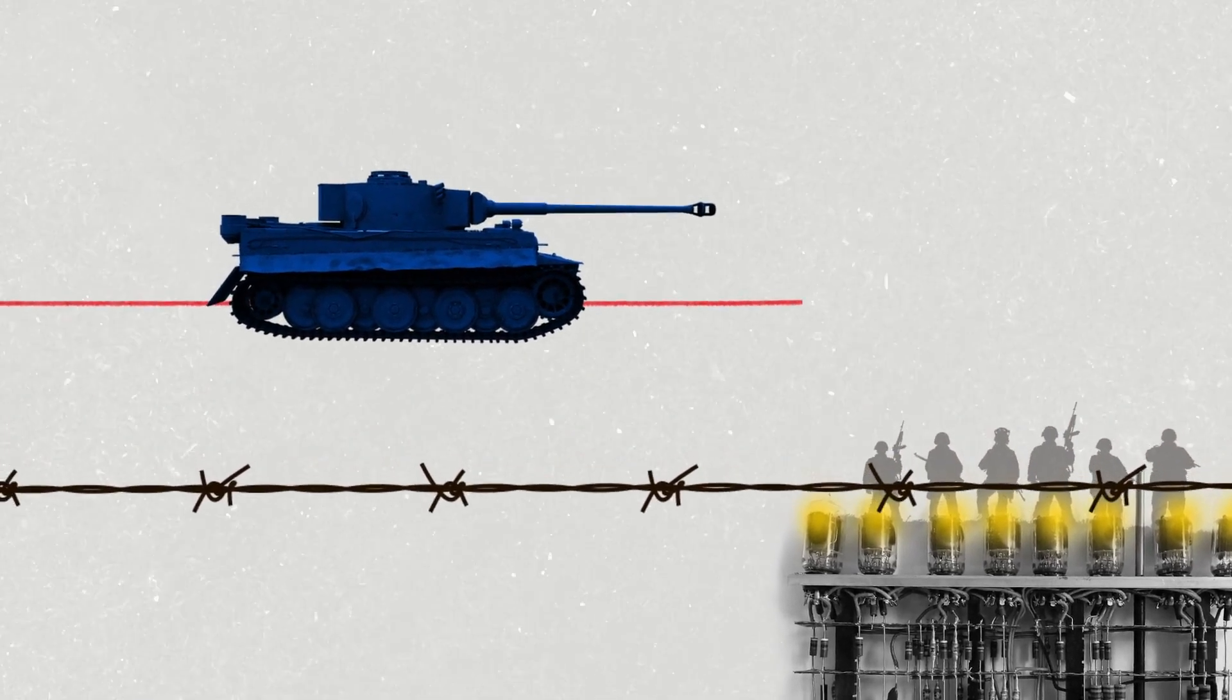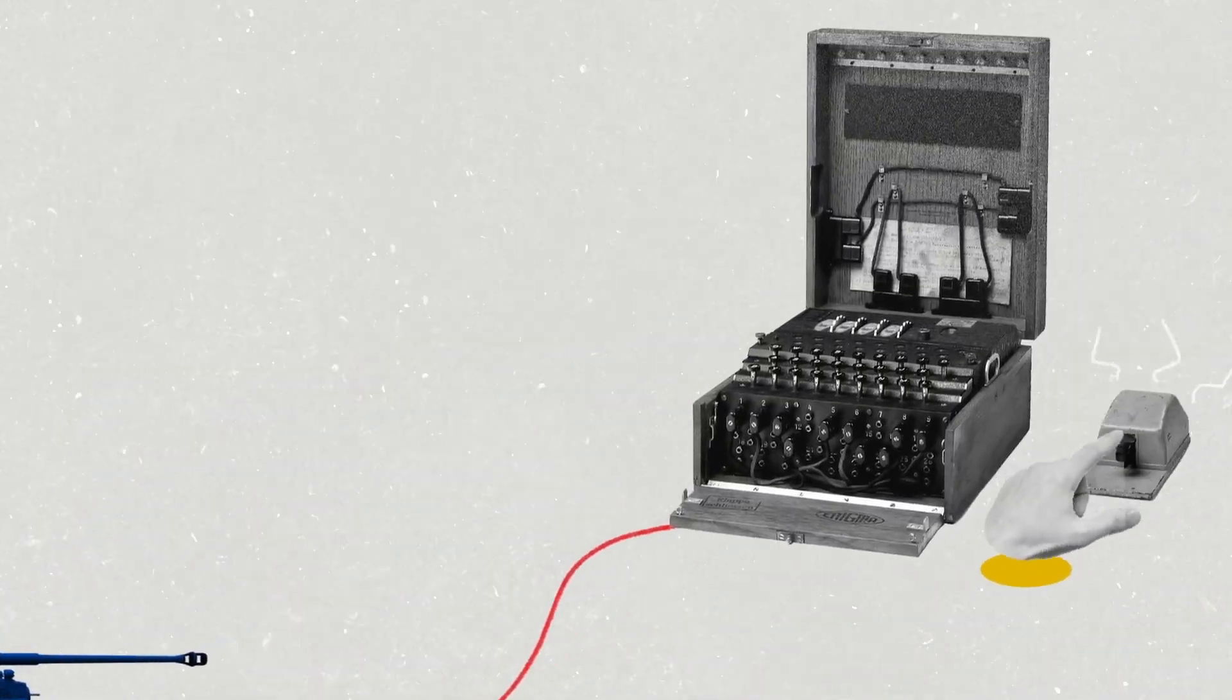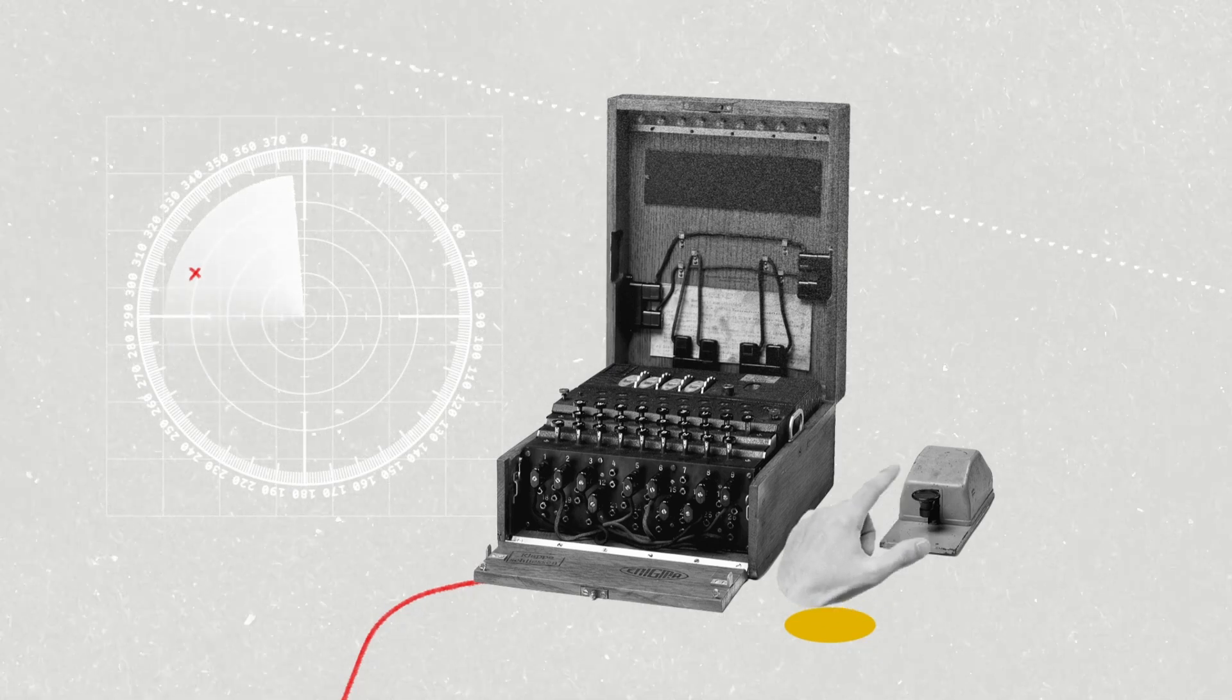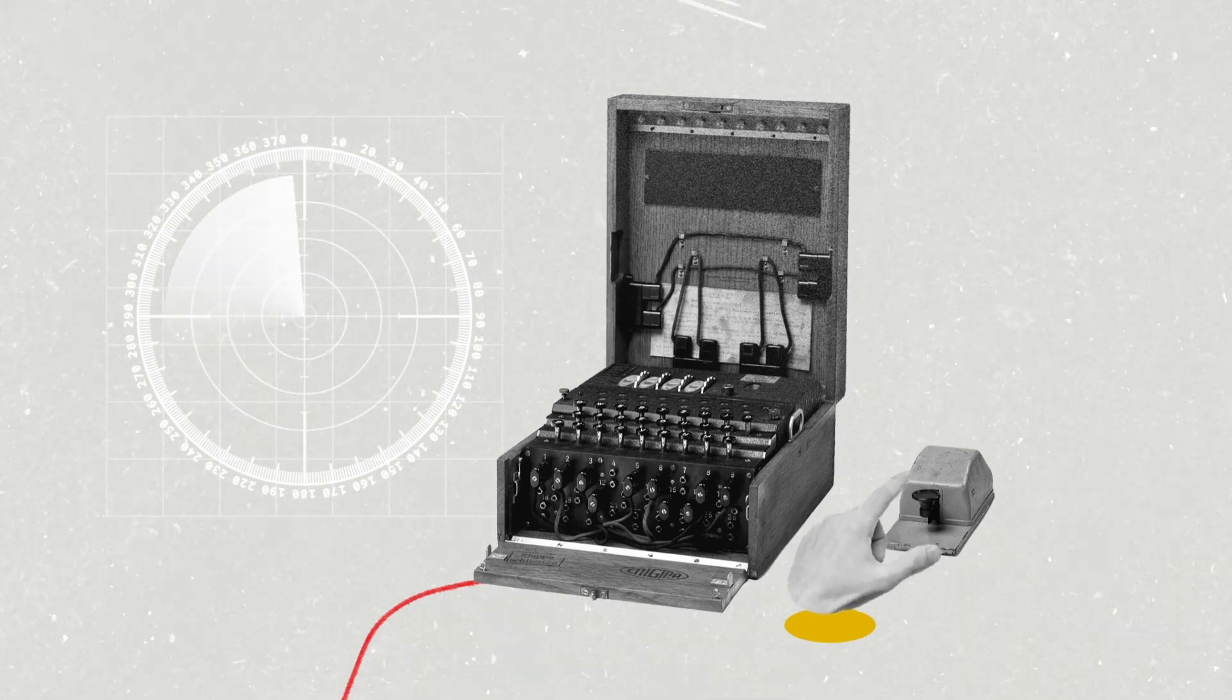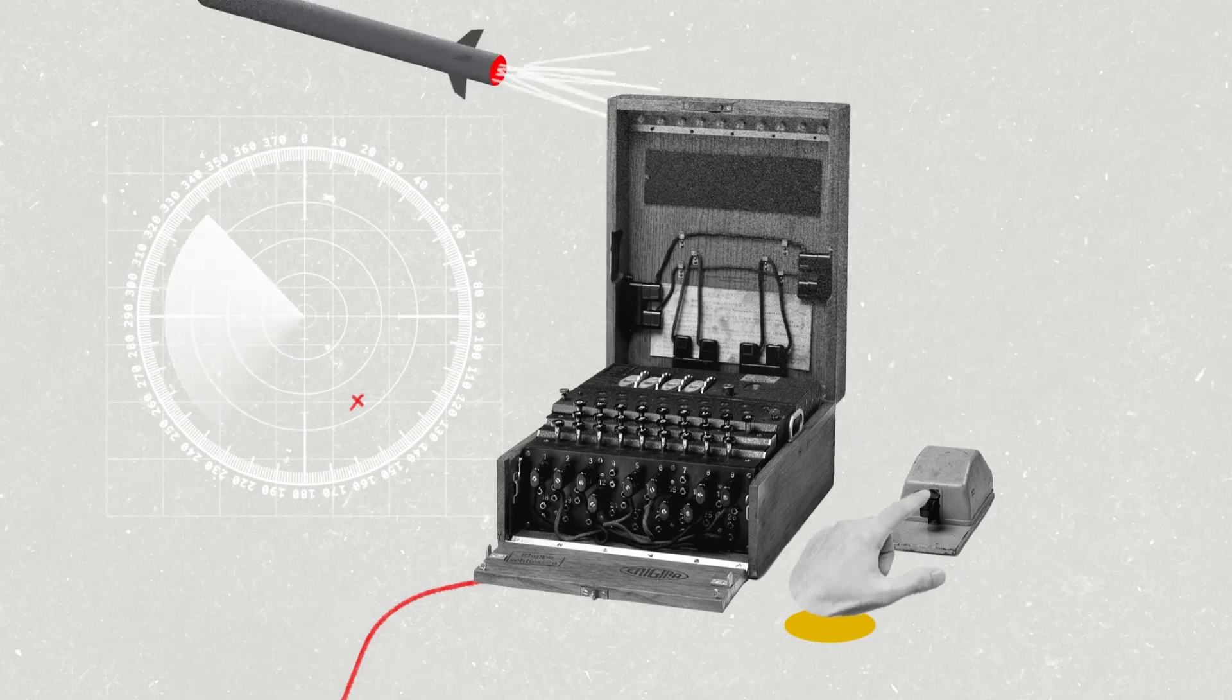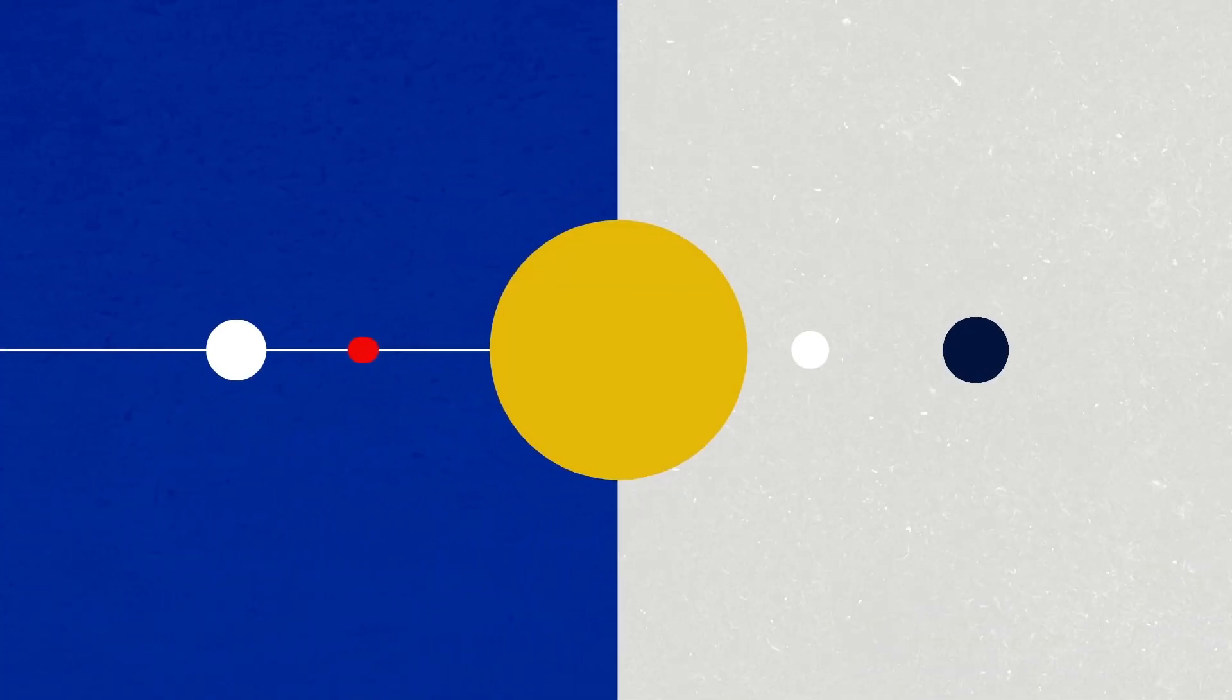Electronic processes even began to replace the people known as computers, who had been previously doing this work. By the middle of the 20th century, it looked like the hardware was ready to take on other human tasks.